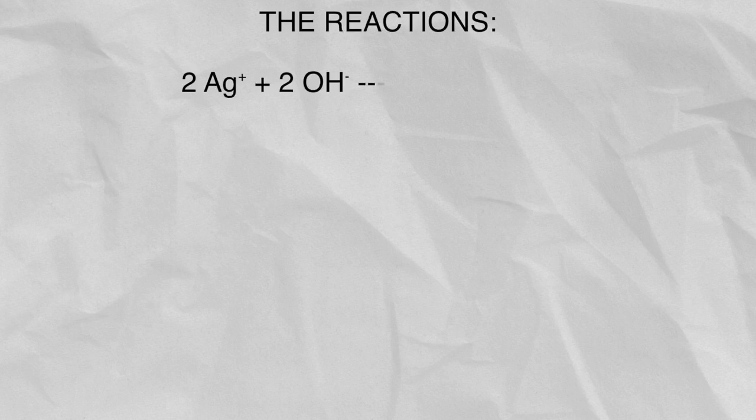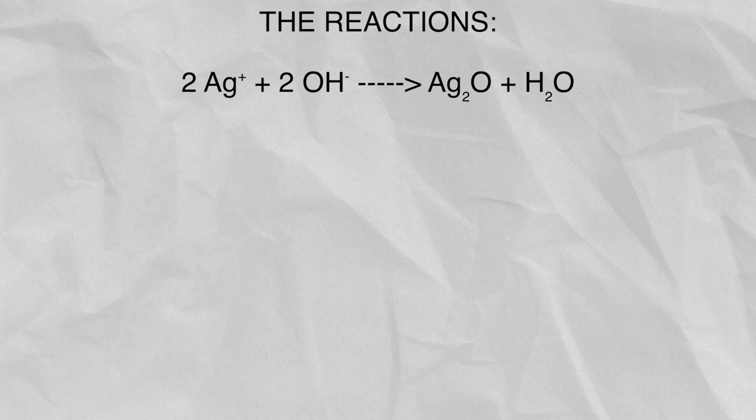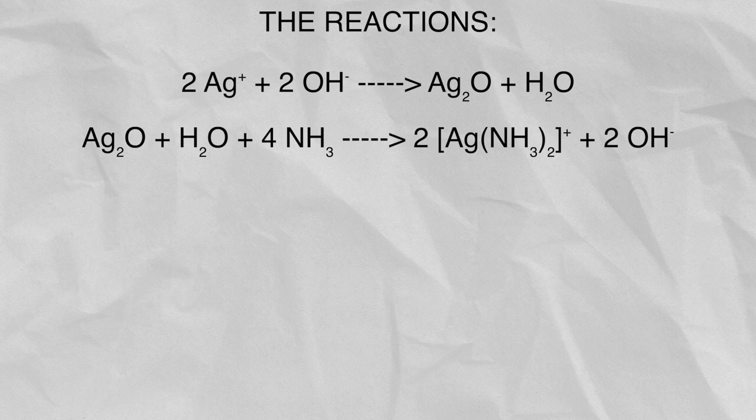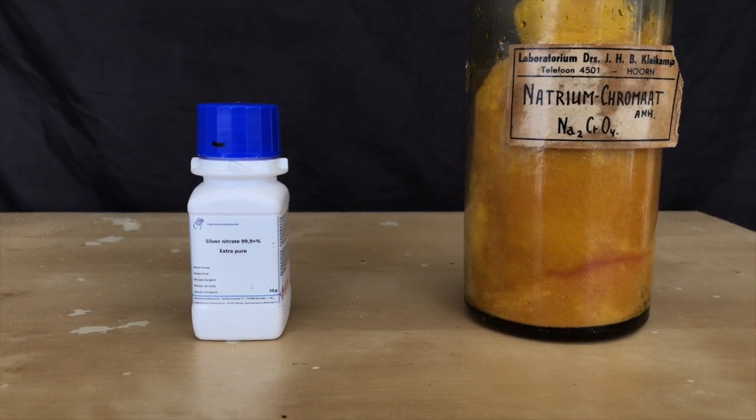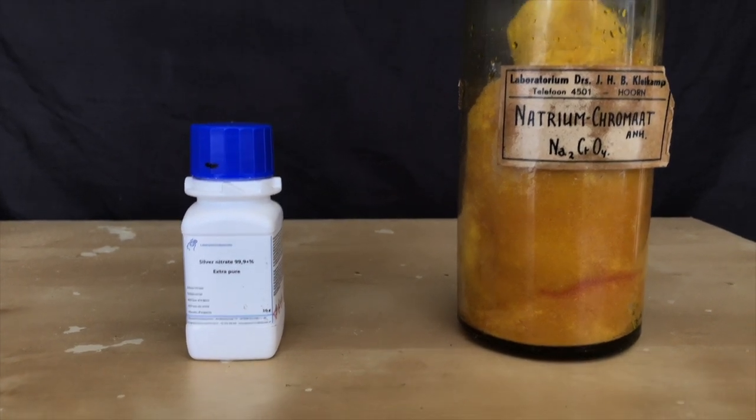At first, silver plus ions react with hydroxide ions to form insoluble silver oxide, which didn't happen in our case because I added way too much ammonia. The silver oxide then reacts with ammonia to form a water-soluble complex, which later on reacts with the glucose to form elemental silver. One of you had a great idea that I showed the test for silver using chromate.